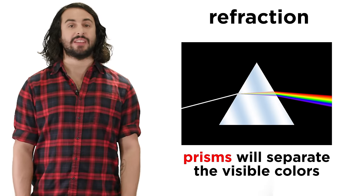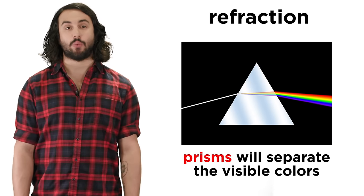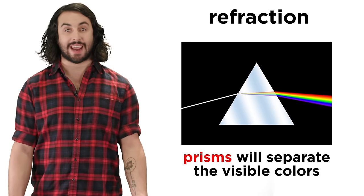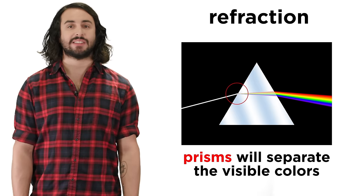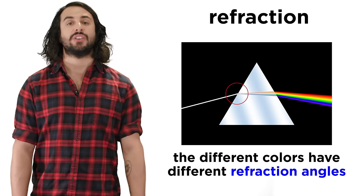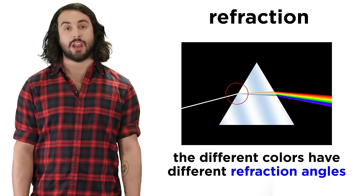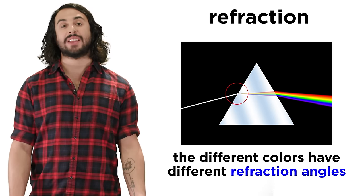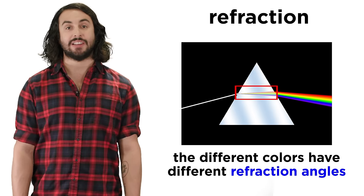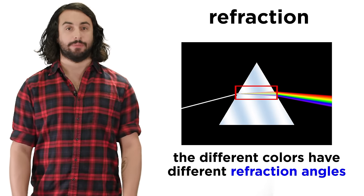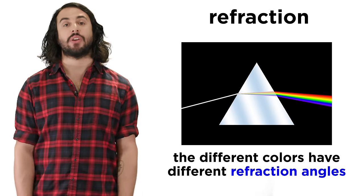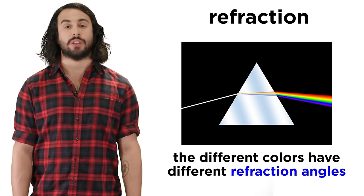This is why a prism is able to split up white light into all the individual colors it contains, because when light hits the prism at an angle, the different wavelengths of visible light are slowed down by different degrees, and thus have slightly different angles of refraction. This causes the colors to fan out such that they are individually visible.